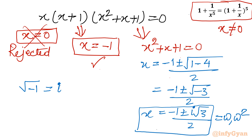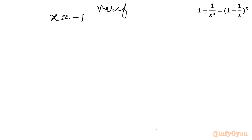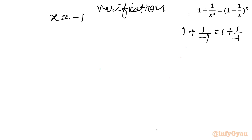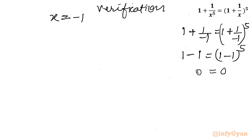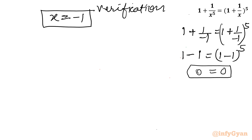So the total solutions are three: x = −1, and the two complex cube roots of unity ω and ω². Let us verify x = −1: LHS = 1 + (1/(−1)⁵) = 1 − 1 = 0; RHS = (1 + 1/(−1))⁵ = (1 − 1)⁵ = 0⁵ = 0. So LHS = RHS = 0, confirming x = −1 is a valid solution.